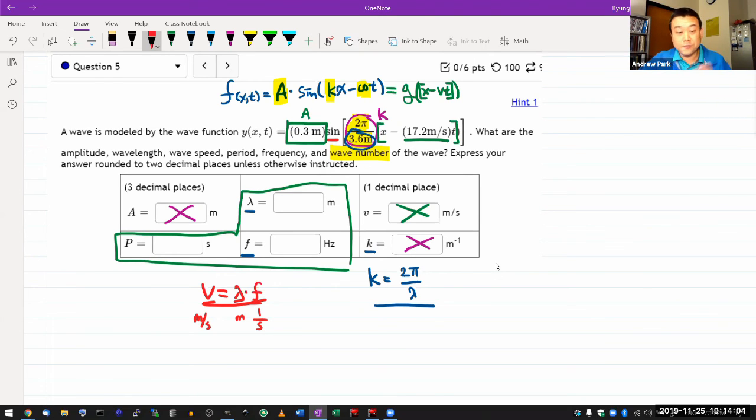And I remember however I put them together, the result should have correct units. Then there's really only one way to put them together and that's going to give you the correct relationship. So from this you can get, oh, frequency is wave speed divided by wavelength. And you have wave speed and wavelength so you can get frequency.